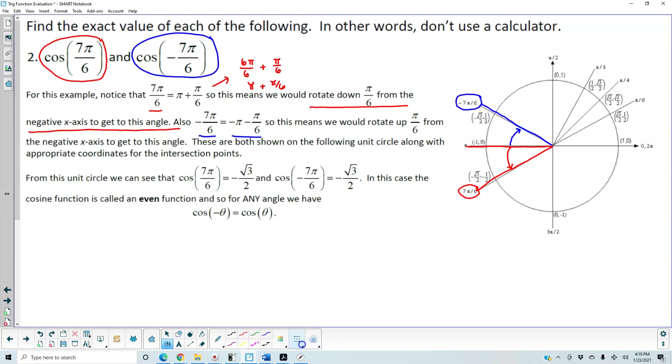Now, these are both shown in the following unit circle, as I've just shown you, along with the appropriate coordinates for the intersection points.